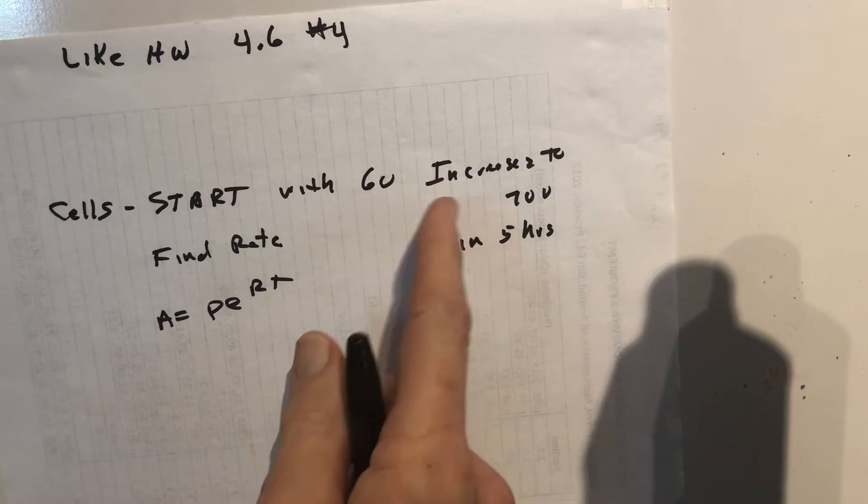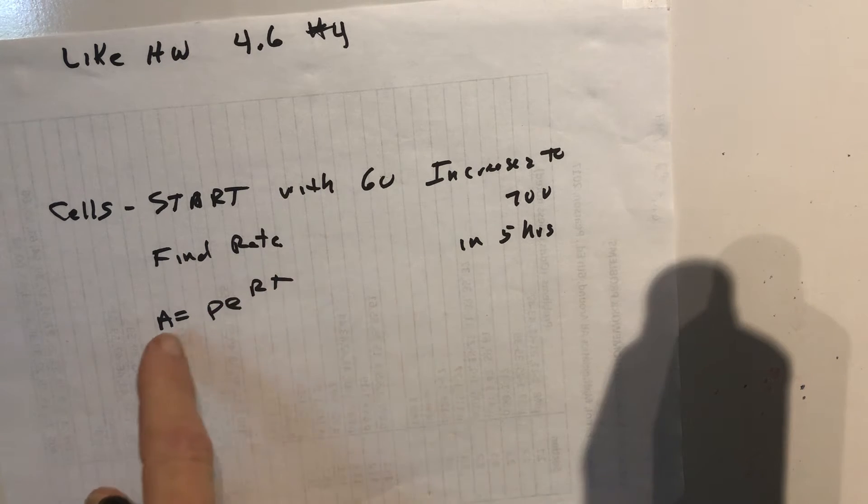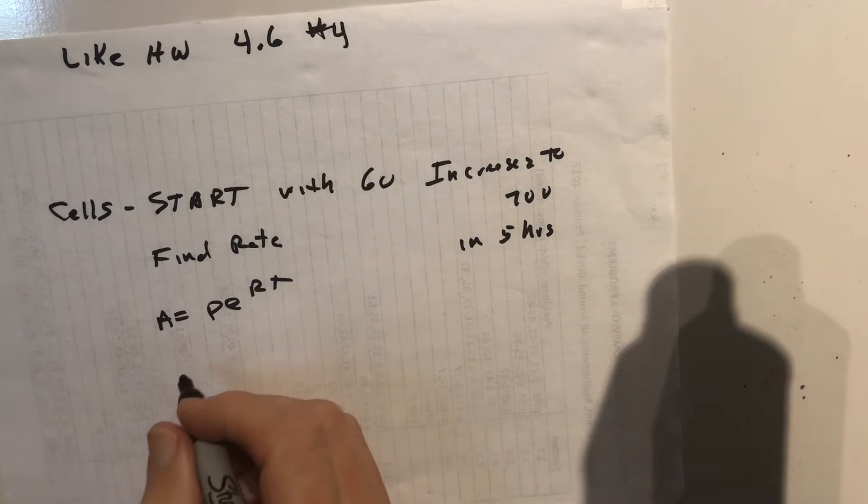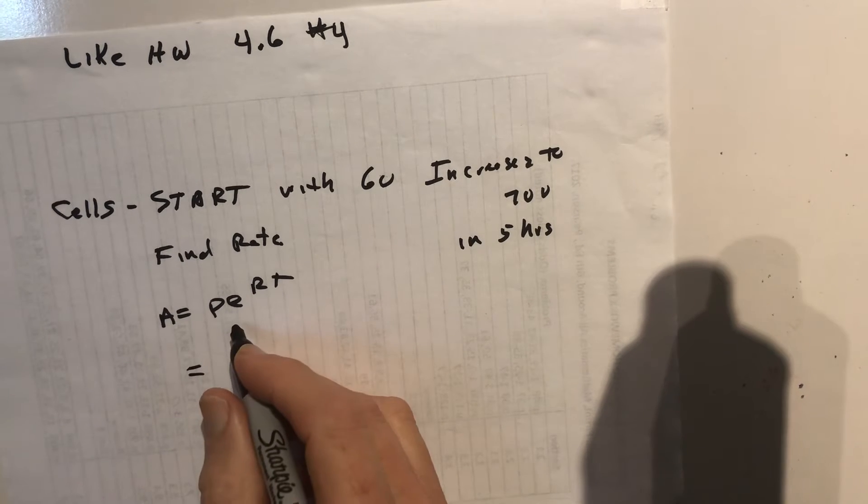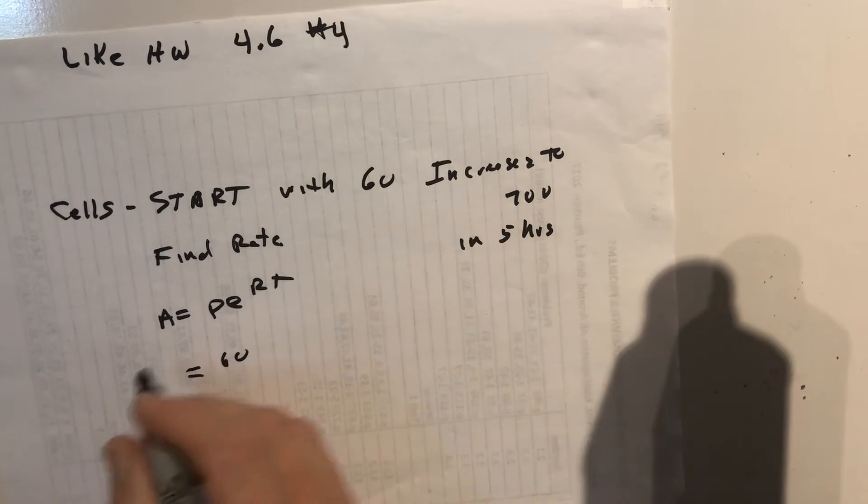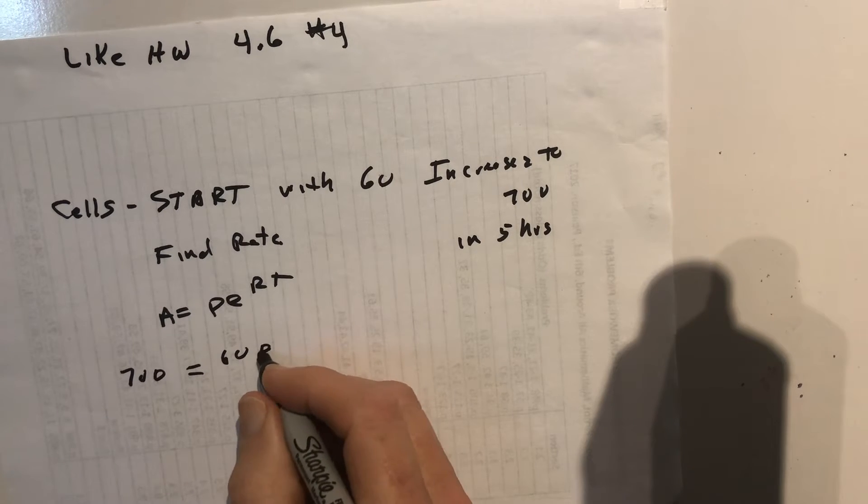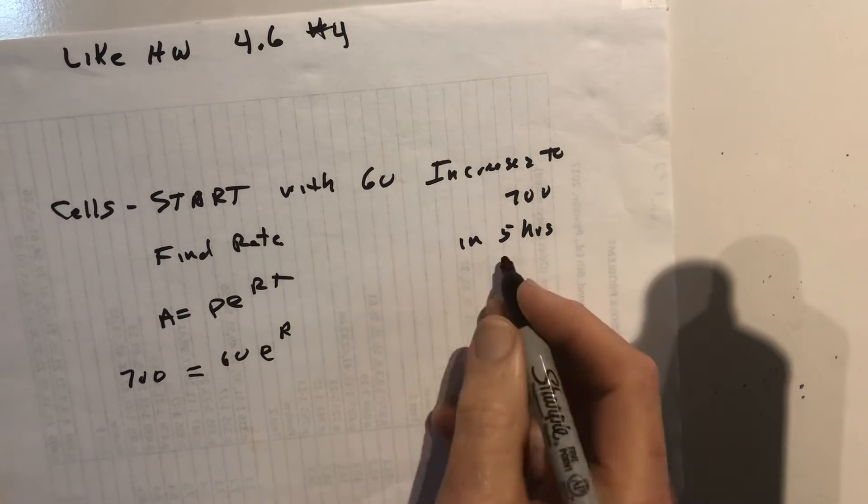From 60 to 700 in five hours - what is the rate? This has to do with natural growth, so it's P*e^(rt). We're starting with 60, we end up with 700, e to the rate we don't know, but the time was five hours. First thing you always do if you know both of these is divide 700 by 60.